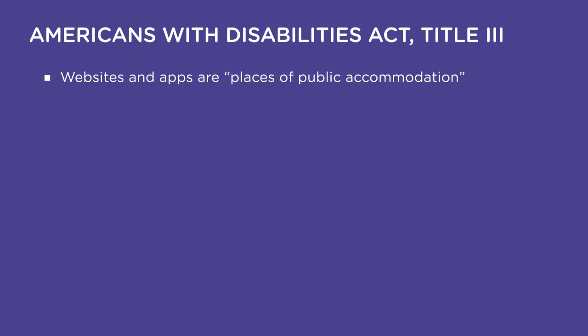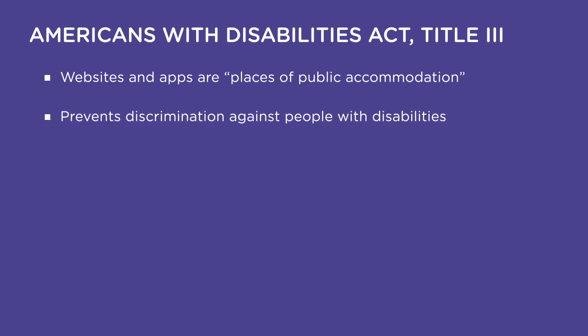Making your content accessible to all users is not just the right thing to do — it's required by law. In America, Title III of the Americans with Disabilities Act has been applied to digital content like websites and apps as places of public accommodation. Creating inaccessible online content is like designing a new building without wheelchair ramps. It's considered discriminatory and could leave your product subject to a costly lawsuit.